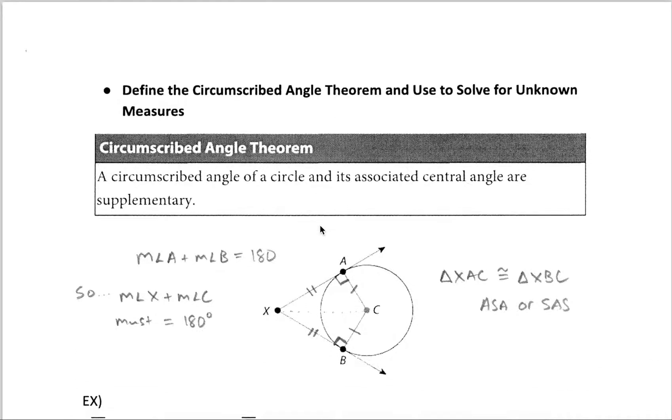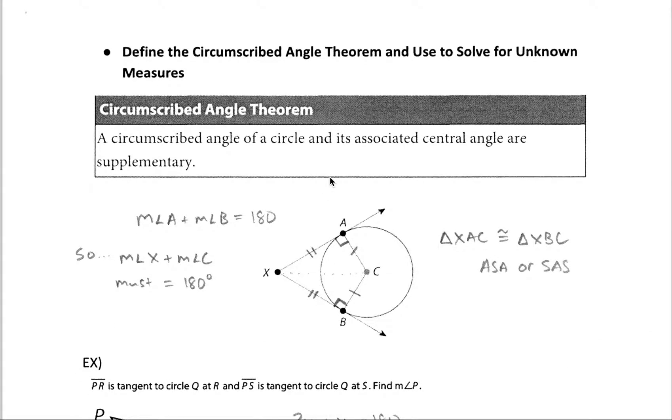Next let's get into these circumscribed angles. A circumscribed angle is an angle that's created or drawn outside a shape, in this case a circle. And it's created by these intersecting tangent lines. So if you have tangent lines coming off a circle intersecting, they create what's called a circumscribed angle.